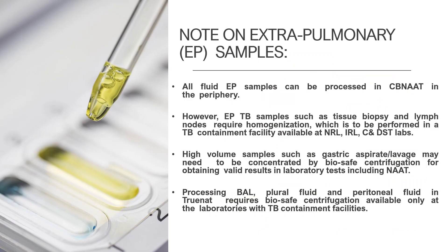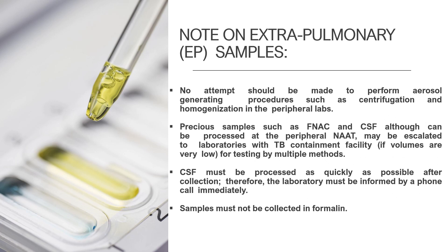A note on extra-pulmonary samples: a few extra-pulmonary samples can be processed in GeneXpert at the periphery. However, extra-pulmonary TB samples such as lung tissue biopsies and lung lymph nodes require homogenization, which must be performed in TB containment facilities such as national reference labs, intermediate reference labs, and culture and DST labs. High-value samples such as gastric lavage aspirate may need centrifugation for obtaining valid results. Processing pleural fluid and peritoneal fluid in Truenat requires biosafety centrifugation, available only at laboratories with TB containment facilities. No attempts should be made to perform hazardous processes such as centrifugation and homogenization in peripheral labs. Samples such as FNAC and CSF, although they can be processed at the periphery, may be associated with laboratory contamination. CSF must be processed as quickly as possible; samples must not be stored.